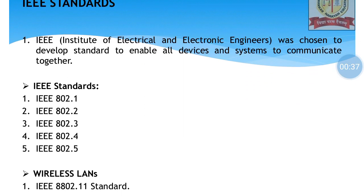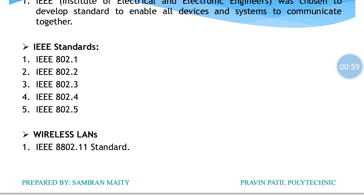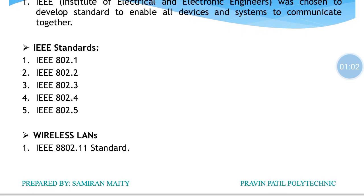IEEE stands for Institute of Electrical and Electronic Engineers. They were chosen to develop standards to enable all devices and systems to communicate together. Basically, they were given responsibility for designing standards that could deal with efficient communication among two or more devices. These are some IEEE standards ranging from 802.1 to 802.5, and as far as wireless LAN technology is concerned, the IEEE standard for the same is 802.11 — not 8802, just 802.11.